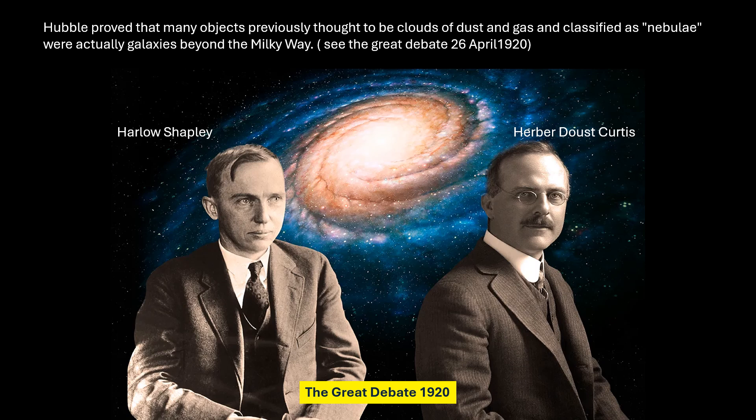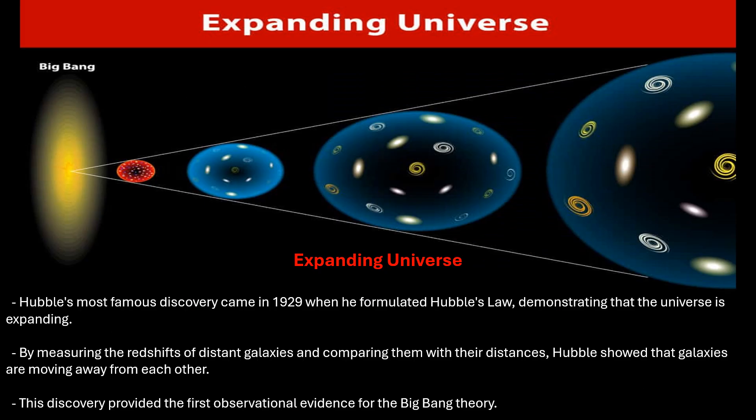See the great debate of 26th April 1920 between Harlow Shapley and Herbert d'Aust Curtis. Hubble's most famous discovery came in 1929, when he formulated Hubble's Law, demonstrating that the universe is expanding. By measuring the redshifts of distant galaxies and comparing them with their distances, Hubble showed that galaxies are moving away from each other. This discovery provided the first observational evidence for the Big Bang.